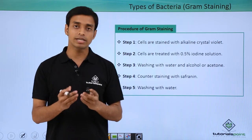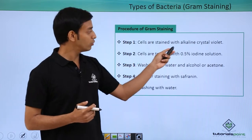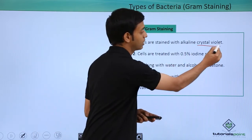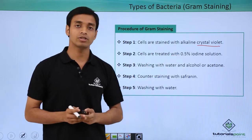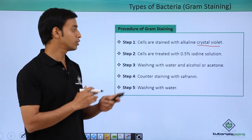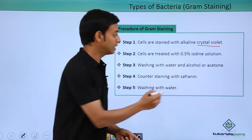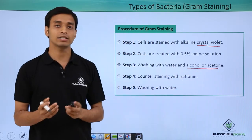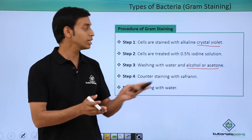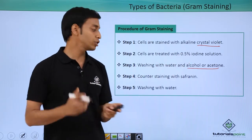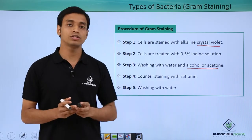The procedure of gram staining: first, bacterial cells are stained with an alkaline stain known as crystal violet. Next, cells are treated with 0.5% iodine solution. After iodine treatment, we wash with water and then with alcohol or acetone, which act as decolorizers. The fourth step is counter staining with safranin. Lastly, we wash with water.